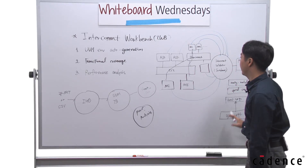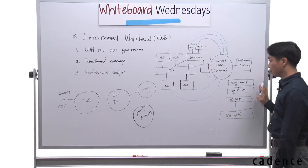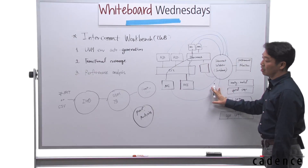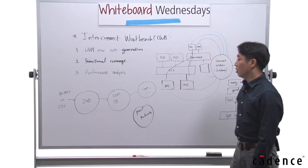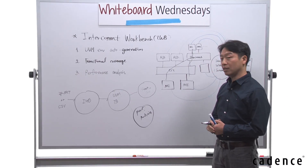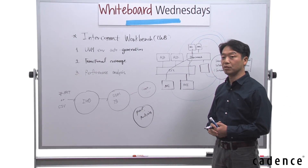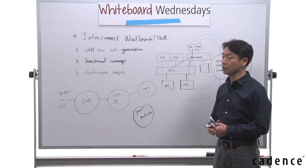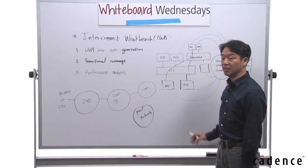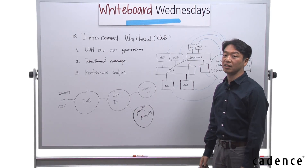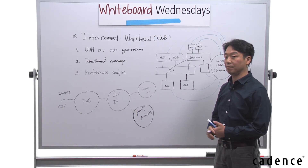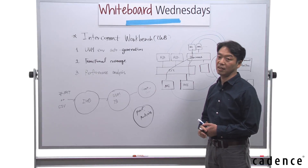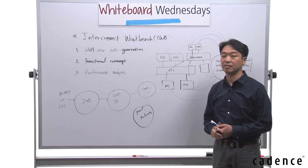This is measured on a clock cycle basis. In conclusion, IWB is the most important tool for SOC interconnect verification and performance validation these days.